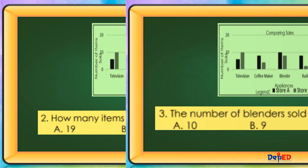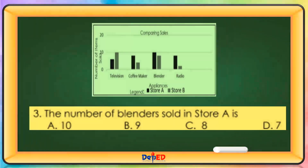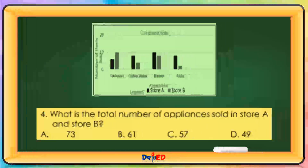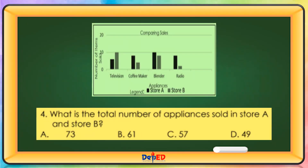The number of vendors sold in store A is? The answer is letter A — 10. What is the total number of appliances sold in store A and store B? The answer is letter C — 57.